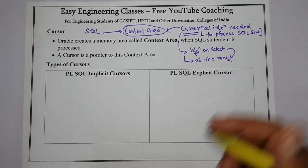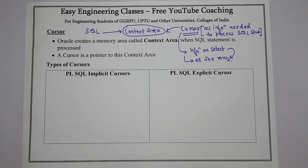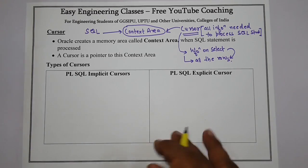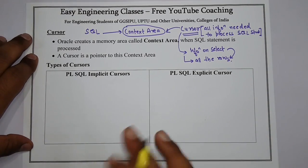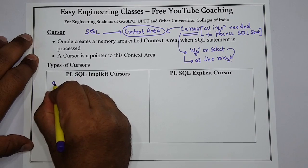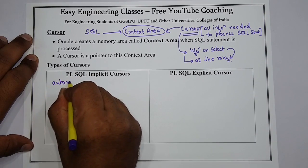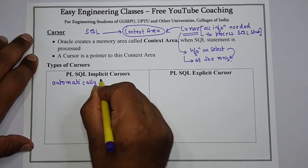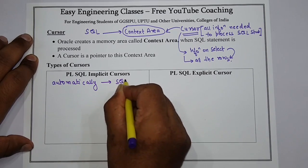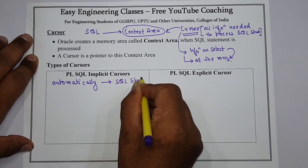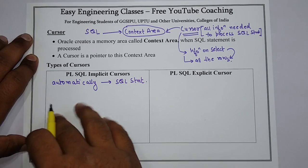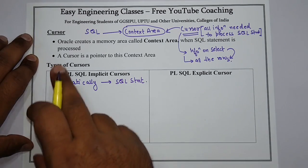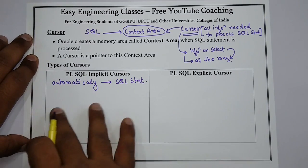There are two different types of cursors in PL/SQL: implicit cursors and explicit cursors. Implicit cursors are automatically generated by Oracle whenever an SQL statement is processed.